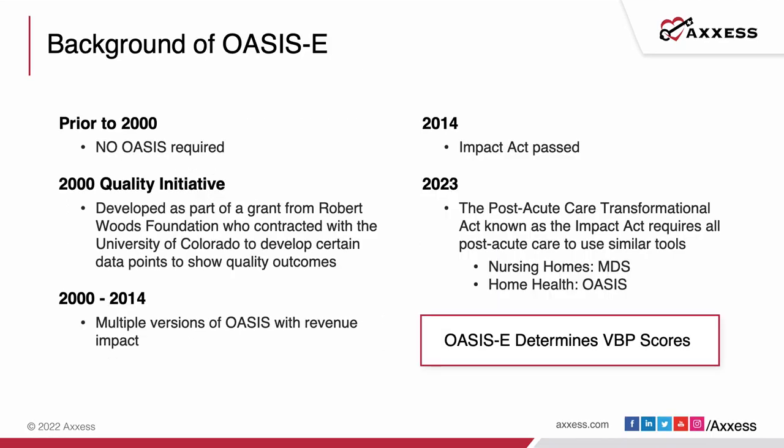Prior to the year 2000, we had no OASIS. We were able to do assessments on just about anything we wanted, and we all kind of made up our own tools. By the year 2000, we went through the balanced budget act and the interim payment system. During that period, CMS contracted with the University of Colorado — Peter Shaughnessy and Kathy Chrisler were the two people instrumental in putting OASIS together. The federal government felt they weren't able to track progress and outcomes for patients.